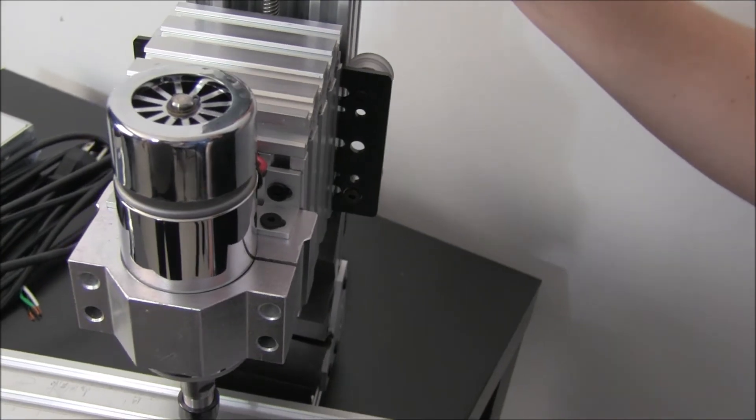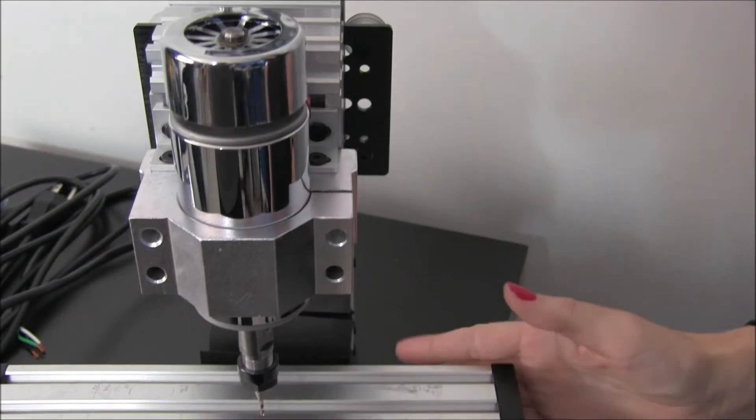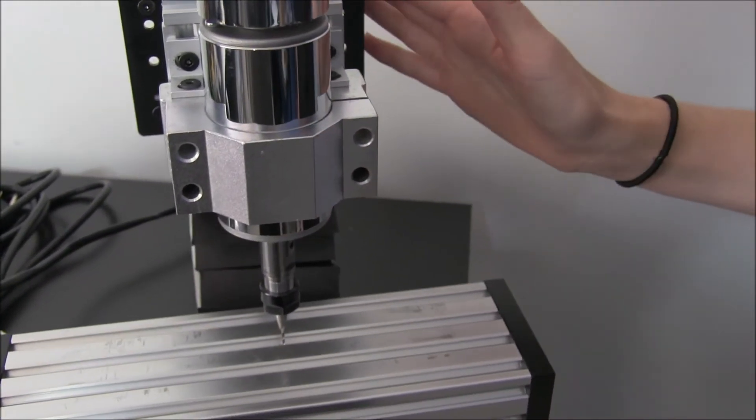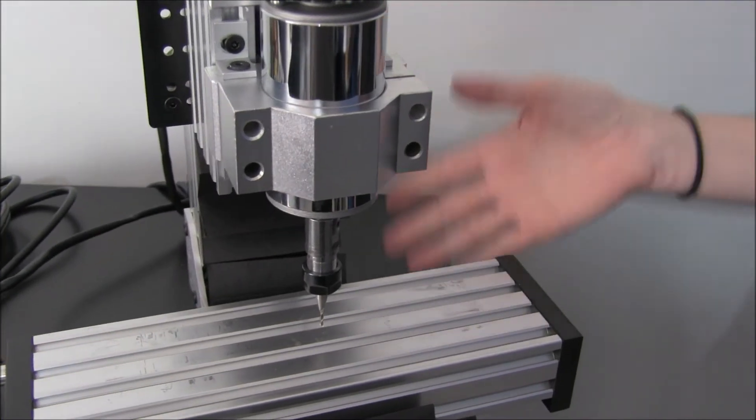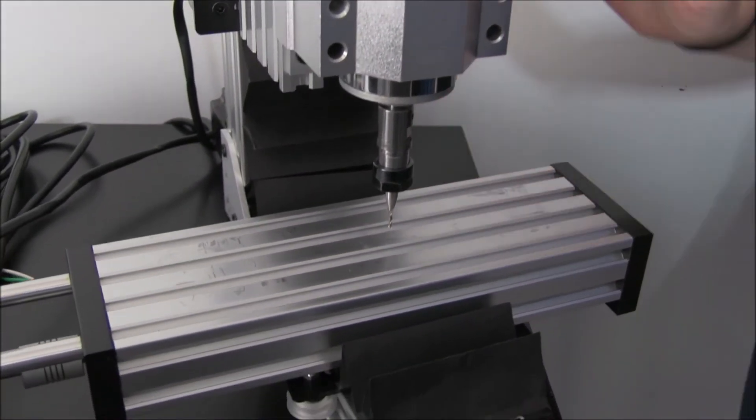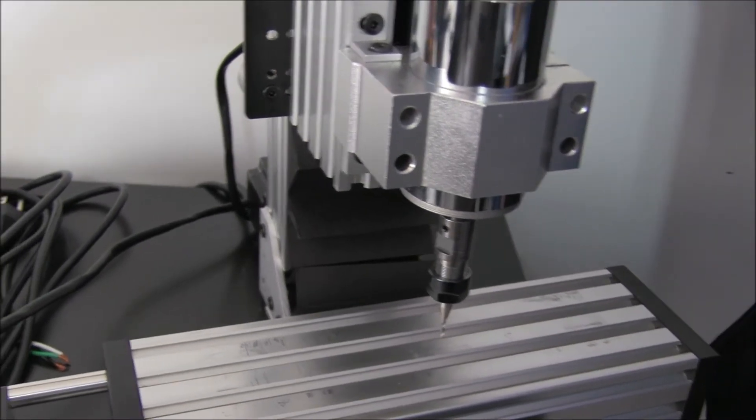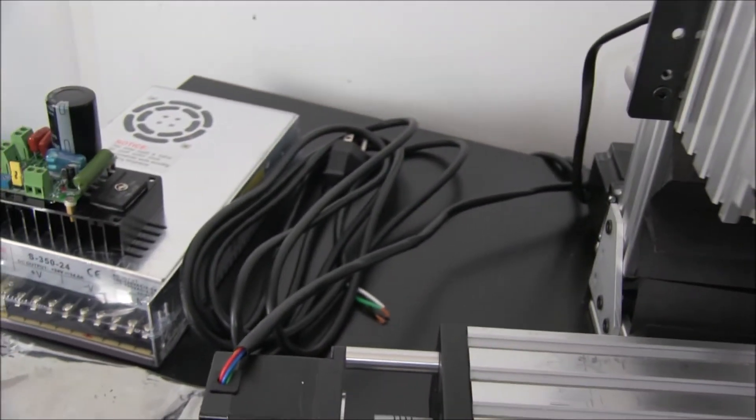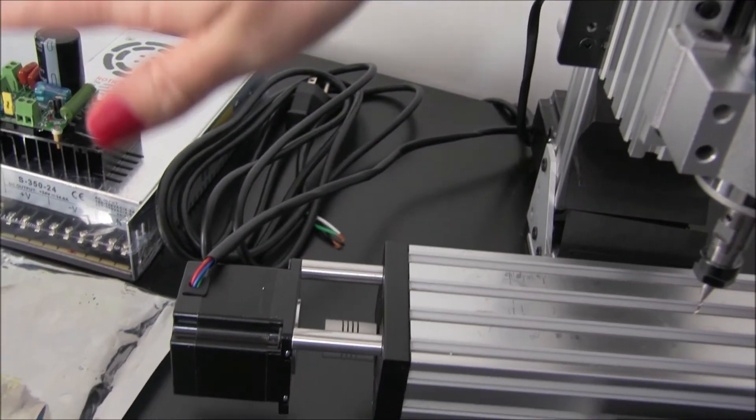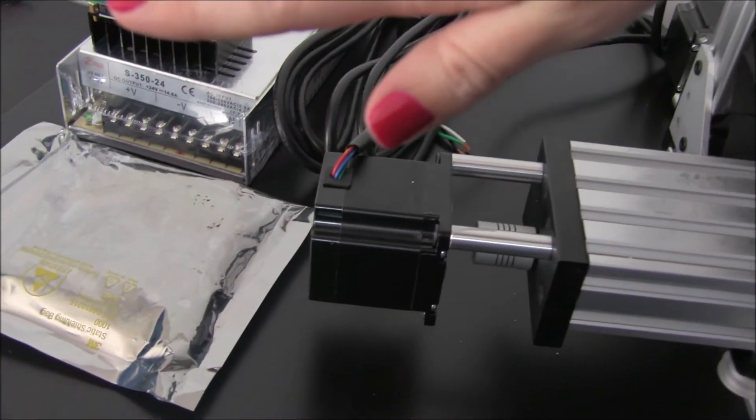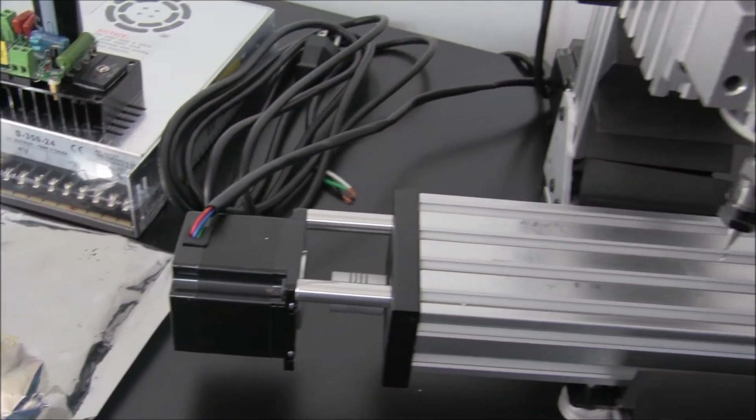Three 250mm length actuator bundles, large gantry plates, wheel kits and fasteners, spindle, speed control and clamp, power supply, tiny G controller, wiring and 20x80 extruded aluminum.